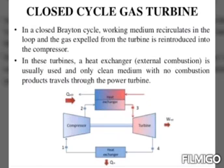The second type is the closed cycle gas turbine. In a closed cycle gas turbine plant, the working fluid does not come in contact with the atmospheric air. The working fluid is air or some other suitable gas. There are four components: compressor, heater or source, turbine, and cooler or sink.